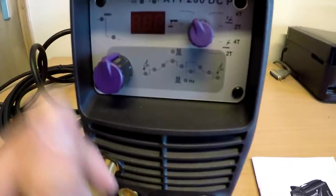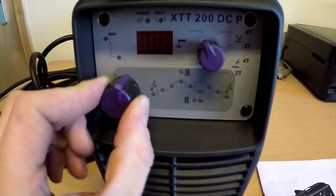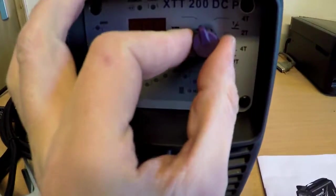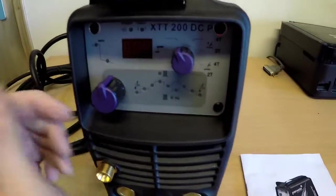So what we've got here is the main process control and here you select the function that you want to weld with.